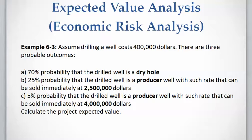There is a 25% probability of success that we get a producer well which can be immediately sold at $2.5 million, and there is a 5% probability that we drill a well that is a producer and can be sold immediately at $4 million. Let's calculate the project expected value.